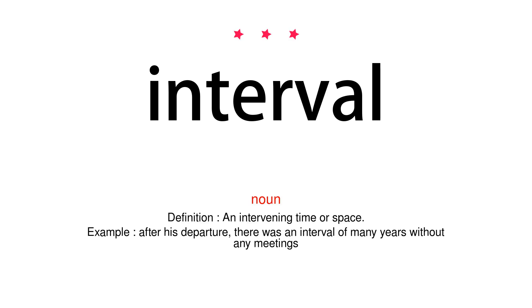Interval. Noun. Definition: An intervening time or space. Example: After his departure, there was an interval of many years without any meetings.